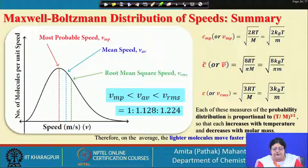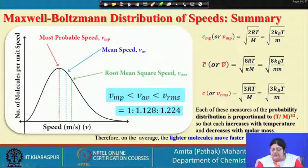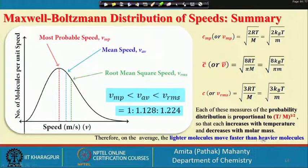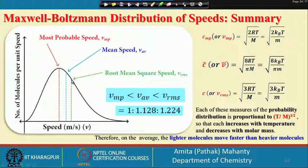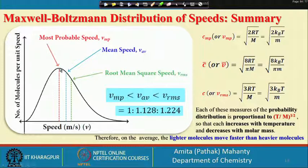All three speed expressions — most probable, mean, and RMS — are proportional to (T/M)^½, meaning speed increases with temperature and decreases with molar mass, so lighter molecules move faster than heavier ones. The RMS speed is the highest, the mean speed is in between, and the most probable speed is the lowest, corresponding to the peak of the distribution. The most probable speed is where the maximum fraction of molecules is found — not the highest speed overall.